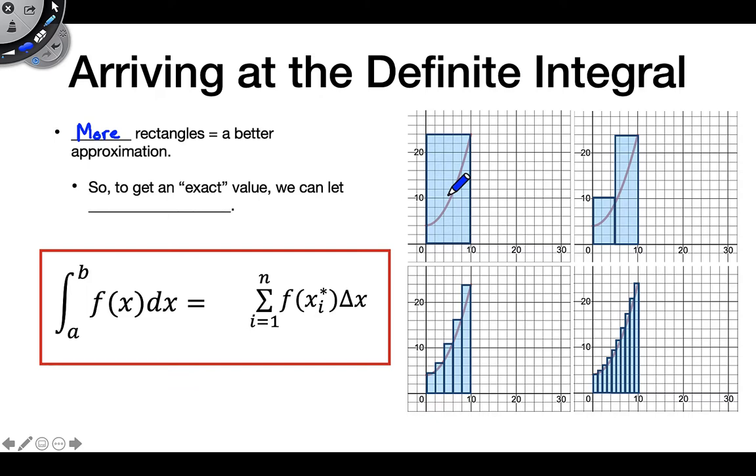We could say, well, let's have as many rectangles as is humanly possible. Because as you can see here, the more rectangles I put on this width of this fixed interval here, the better the approximation is going to be. So what if I let my number of rectangles go to infinity?